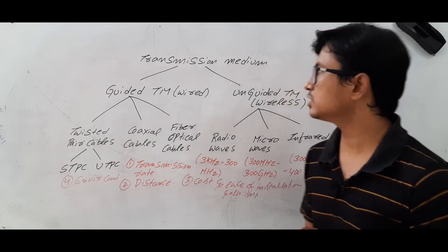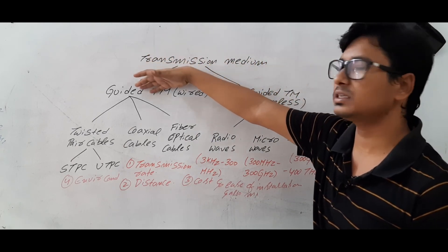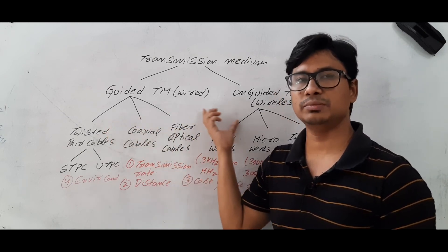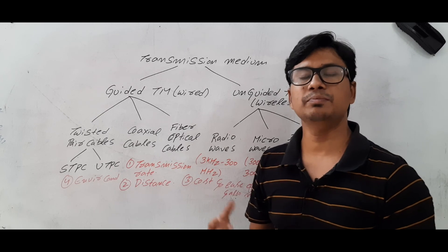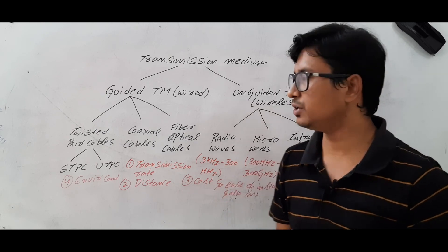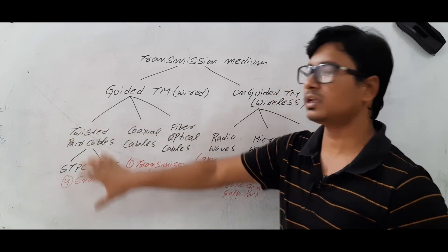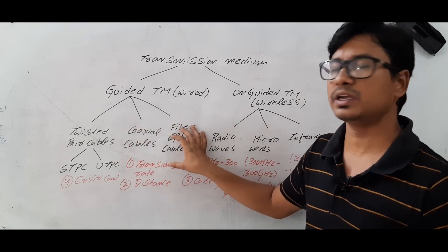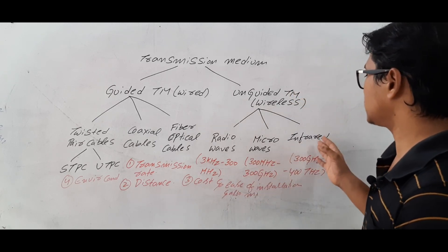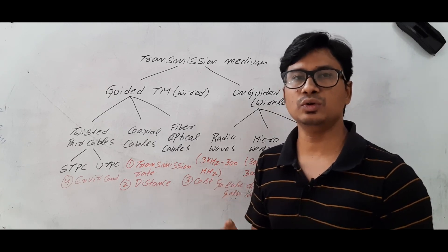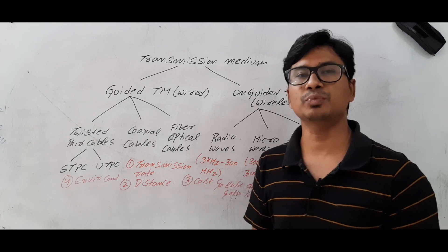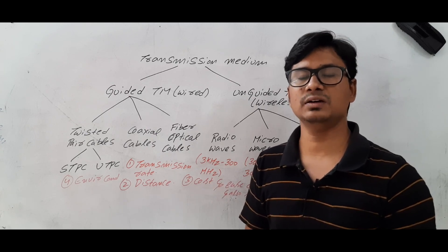I hope you have understood what is the transmission medium, what is guided and unguided transmission medium, and how to select a transmission medium based on the relevant factors. In the coming videos, I will discuss twisted pair cables, coaxial cables, fiber optical cables, and the unguided transmission medium such as radio waves, microwaves, and infrared in detail. Please watch my videos in a sequence so that you will learn everything about the computer networks course. Thank you for watching my video. Have a nice day.